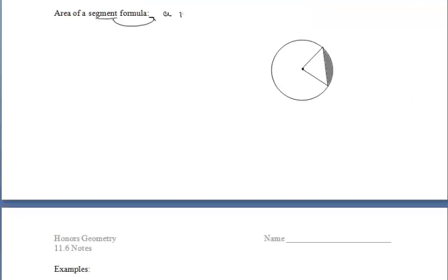And then finally, let's talk about the area of a segment. A segment is a region that's bounded by a chord and its corresponding arc. So if we look up here, we have the chord that we're highlighting here and then the corresponding arc right there. That shaded region there is what we call a segment of a circle. Let's think about how we can find the area of that segment.